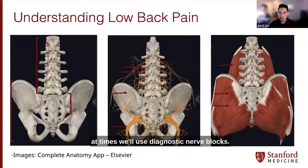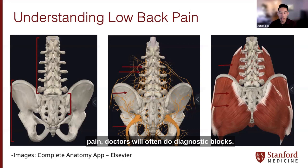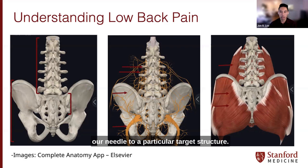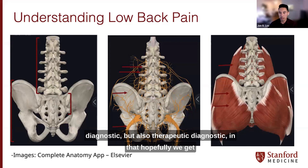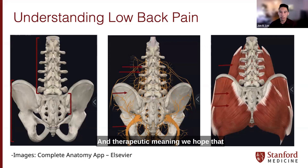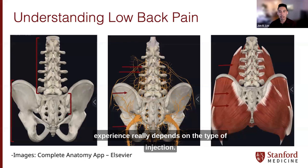As you can see, our backs are very complex. The diagnosis for back pain often requires a combination of seeing you in our clinics, examining you, hearing your story, and listening to what makes your pain better or worse. At times we order imaging, and at times we use diagnostic nerve blocks — using X-ray or ultrasound guidance to precisely direct our needle to a particular target structure, whether a nerve, a joint, or a muscle. We hope these injections are both diagnostic and therapeutic.